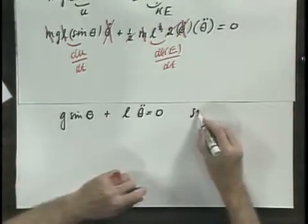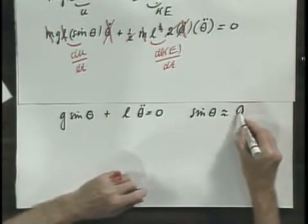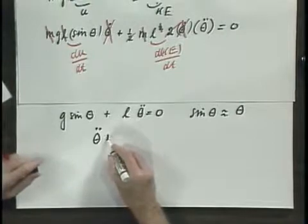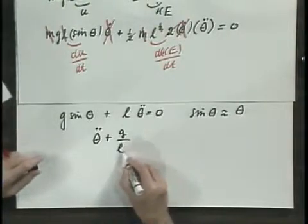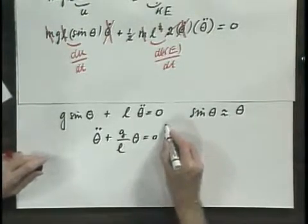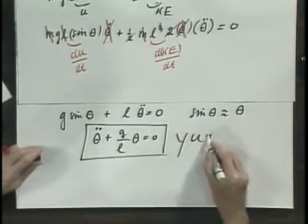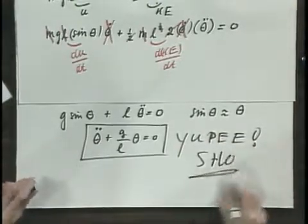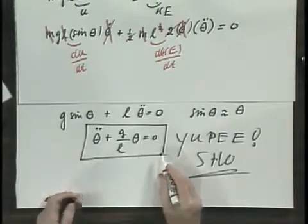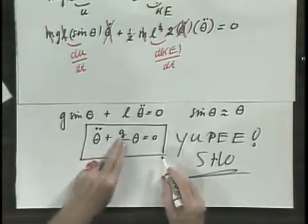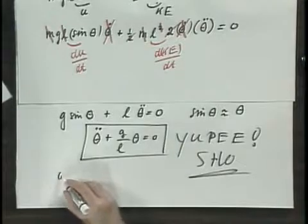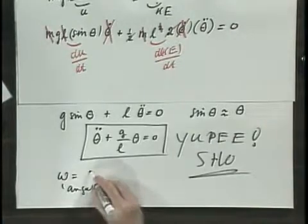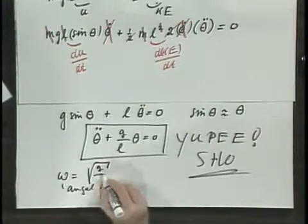For the small angle approximation, sine theta is approximately equal to theta if theta is in radians. So what do I find? That theta-double-dot plus G over L times theta equals zero. This must be a simple harmonic oscillator, because I immediately recognize the form: theta-double-dot plus a constant times theta equals zero. I can immediately write down that the angular frequency is the square root of G over L.